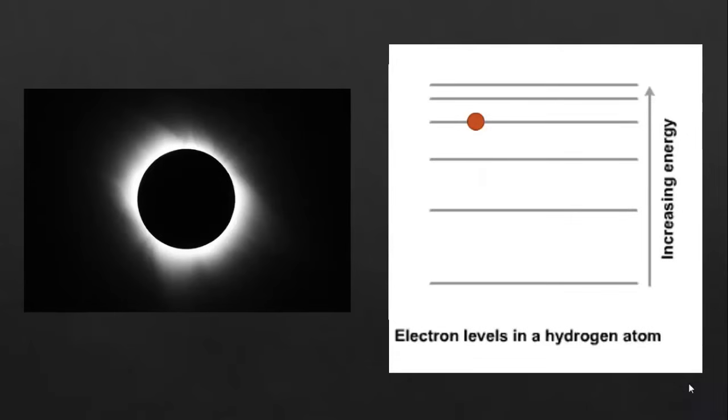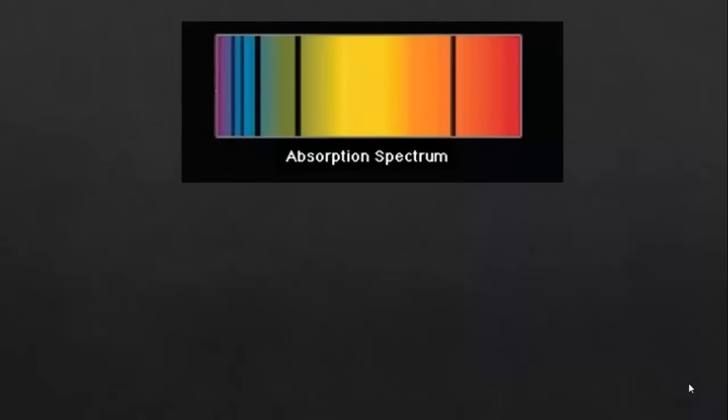The photon is absorbed so it never reaches us here on Earth, and when we look at the spectrum of light from the sun, we will see dark lines that match the frequencies of photons that have been absorbed. These are our absorption line spectra.